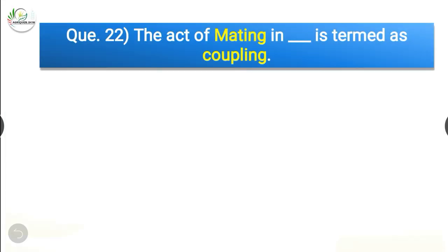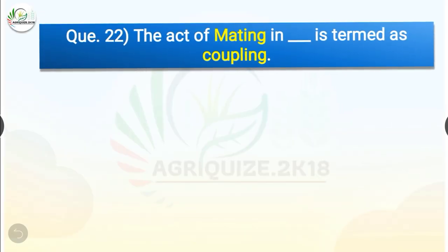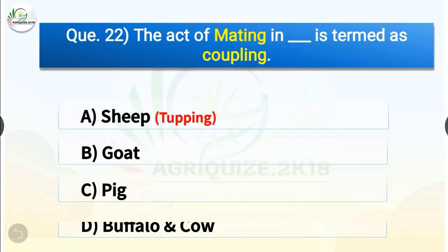Question number 22. The act of mating in dash is termed as coupling. The options are sheep, goat, pig, or buffalo and cow. The correct answer is option C, pig. So the act of mating in pig is termed as coupling. The act of mating in cattle, buffalo, goat and poultry birds is termed as serving.